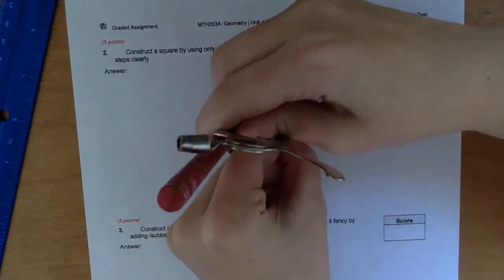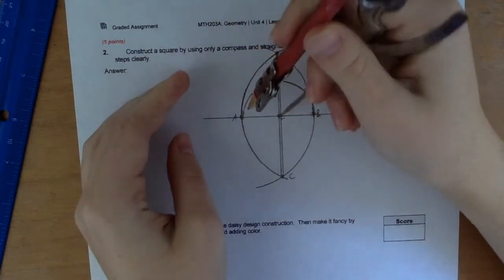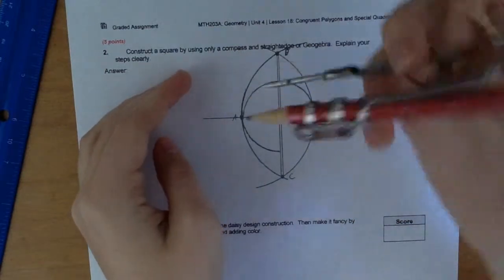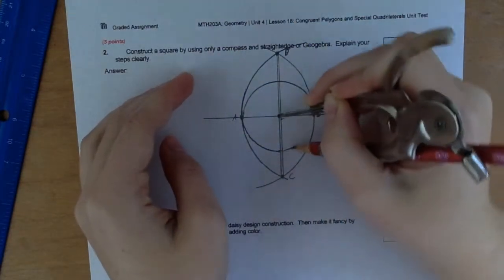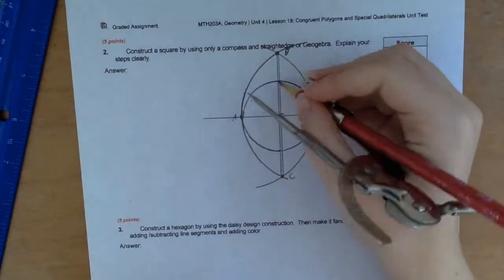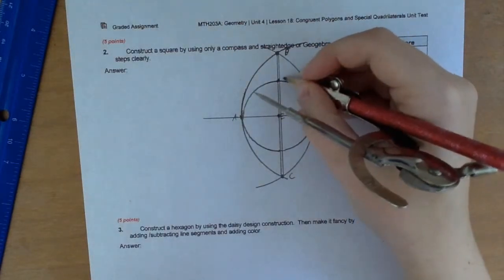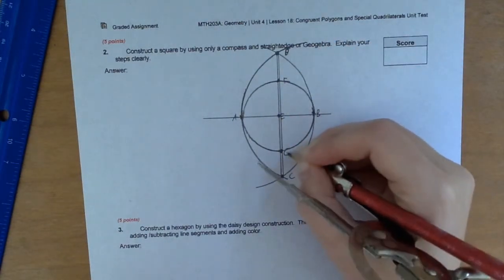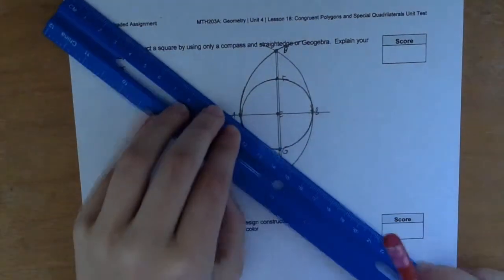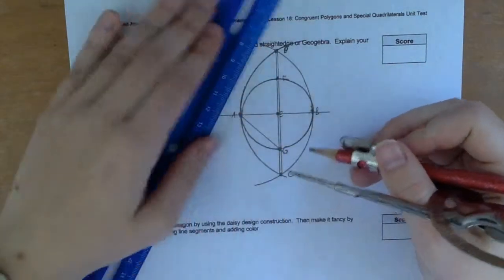And so we'll create the other side of the circle like this, and finally like that. Now we have more points. We're gonna call this one F and this one's gonna be G.